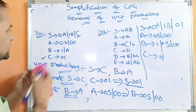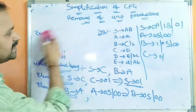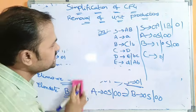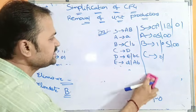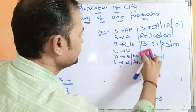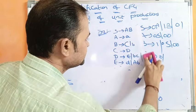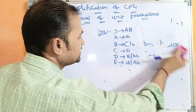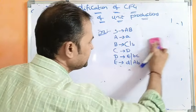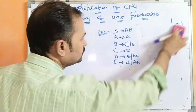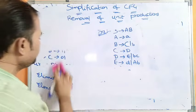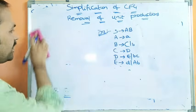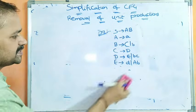Now let us solve the second example. The grammar is: S produces AB. A produces CA. B produces C or B. C produces D. D produces E or BC. E produces D or AB.